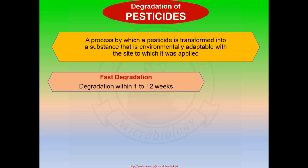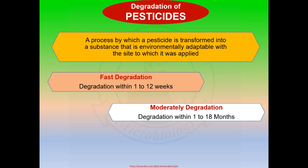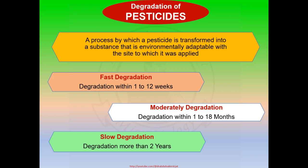Fast degradation means the degradation of pesticides occurs within 1 to 12 weeks. Moderate degradation of pesticides occurs within 1 to 18 months. Slow degradation means the degradation of pesticides occurs in more than 2 years.